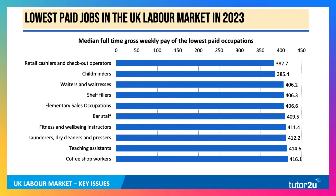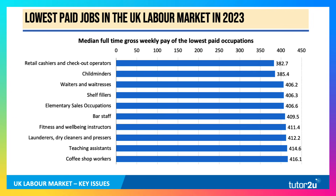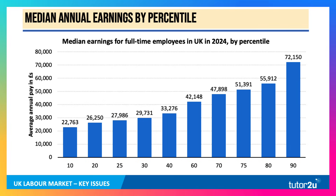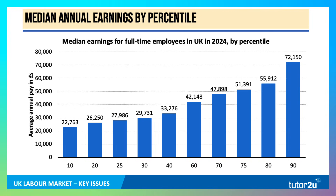This is the median full-time gross weekly pay. So if you're earning £400 a week before tax, you're earning around £20,000 a year before tax. This chart shows median earnings for full-time employees. The 10th percentile — people towards the bottom end of the income scale — have median earnings including overtime of £22,763. Up to including the 30th percentile, median earnings are less than £30,000 a year, whereas for the 90th percentile it's £72,000. And obviously as we move up towards the 100th percentile, the chart gets even steeper.